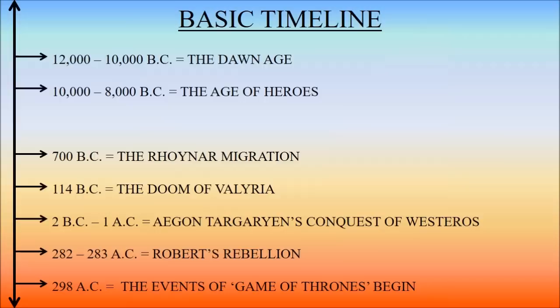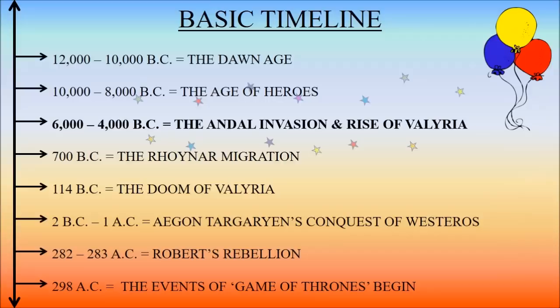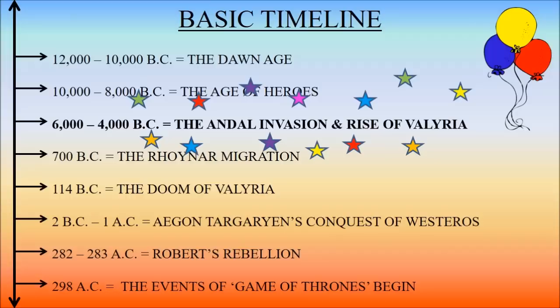So that's about 2,000 years of history in Westeros taken up with the Andal invasion and the conversion of the majority of the population to the Faith of the Seven — that's 4,000 to 6,000 years before Aegon Targaryen conquered Westeros.